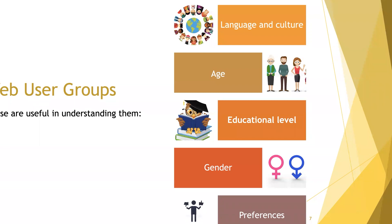Another important factor is gender. Many things change depending on the gender of users. In most cases, people's likes and dislikes change depending on gender. Whatever a male likes won't necessarily be liked by a female. Even the colors of your website may change depending on gender. So gender is an important factor when understanding your user and their preferences — you should adjust your website content accordingly.